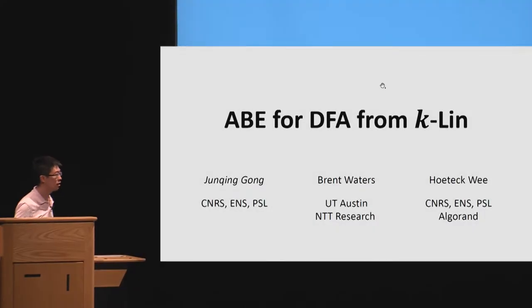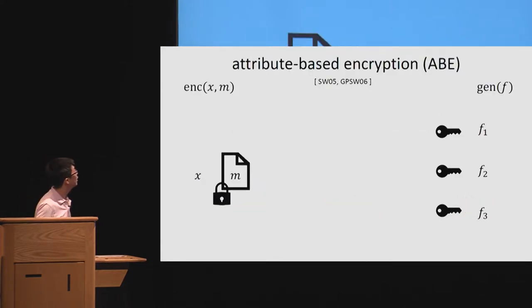Thanks for the introduction, and I will share our work about ABE for DFA. So first, in ABE schemes, the ciphertext is corresponding with attribute X, and the secret key is corresponding with some policies. So if the attribute is a certified policy, then we can recover the message using this secret key.